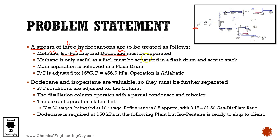The components must be separated. Methane is only useful as a fuel, so it must be separated in a flash drum and sent to the stack. As you can see, we get a flash drum and a gas stream — hopefully in the simulation we get most of the methane here — and then we combust it in the combustion chamber.